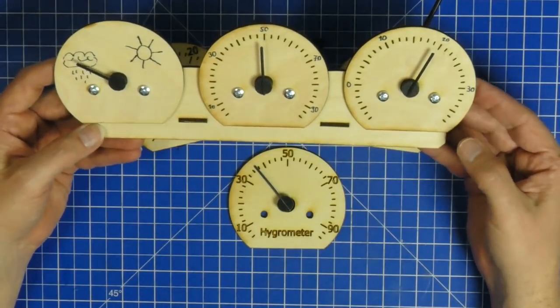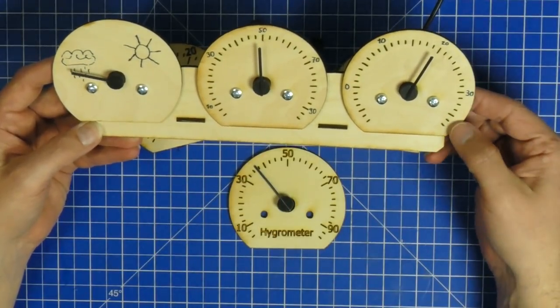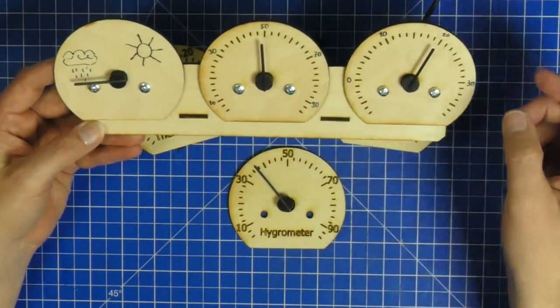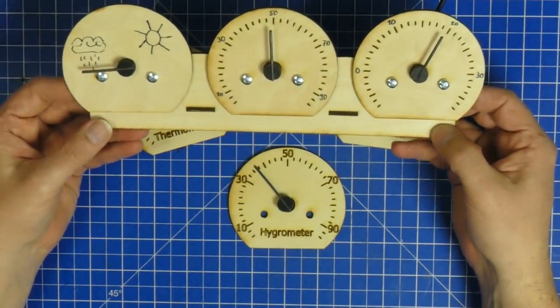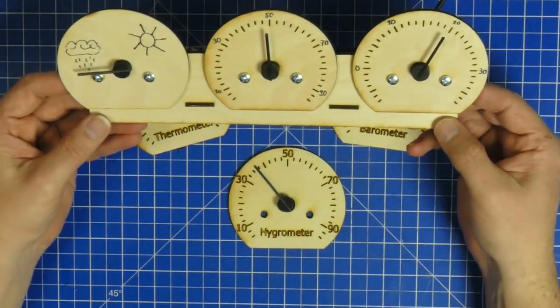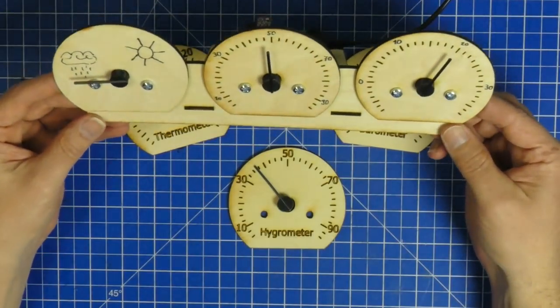So right here we have about 19 degrees Celsius. We've got about 49 percent of humidity and a pretty low air pressure and that's all they do. So how do you build one?